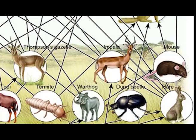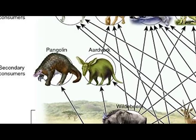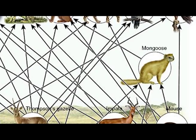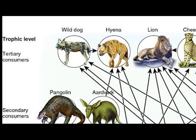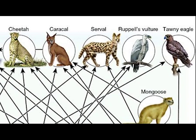The secondary consumers are the pangolin, aardvark, and mongoose. The predators of the savannah are the wild dog, hog, hyena, lion, cheetah, caracal, serval, Rüppell's vulture, and the tawny eagle.